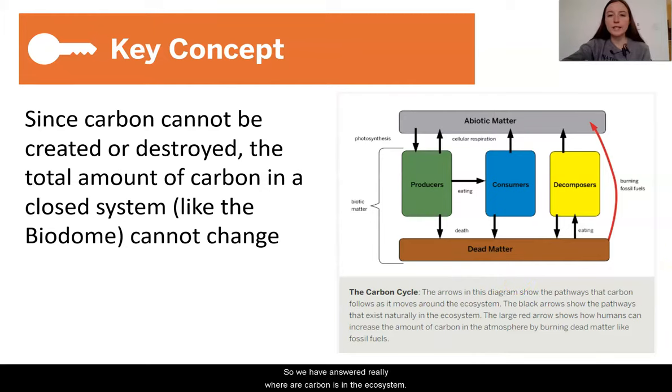So, we have answered really where our carbon is in the ecosystem. But I still am a little unclear about why the decomposers were dying off in the first place. We're going to go ahead and continue our investigations in our final lesson and see if we can find any evidence in some files that we have from the biodome. I look forward to seeing you next time and trying to figure out and draw conclusions about what was wrong in the biodome.